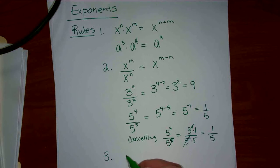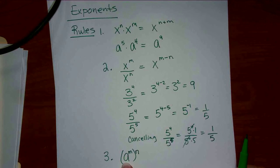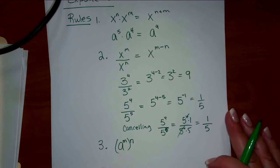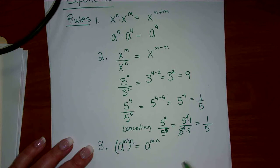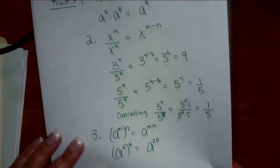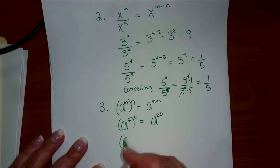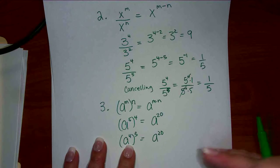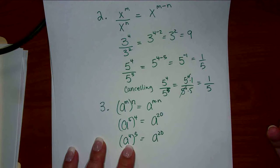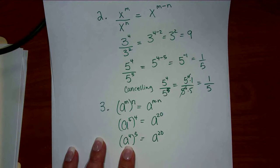Rule three: one base and two exponents — one exponent in a bracket, one out of the bracket — you multiply those exponents. So if we had A to the 5 all to the 4, that would be the same as A to the 20. But also A to the 4 to the 5 is the same answer. That will come in handy later — remember it didn't matter which way, you could actually switch these around. Sometimes that will help you.